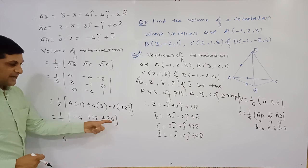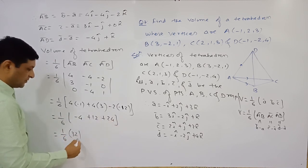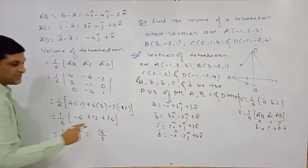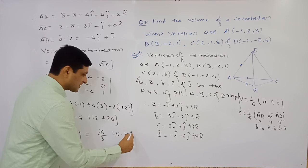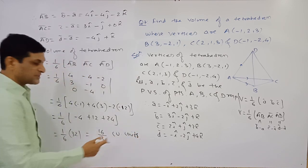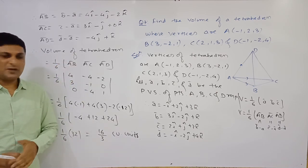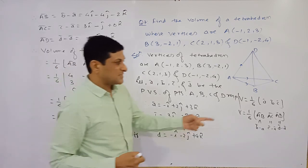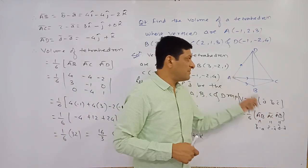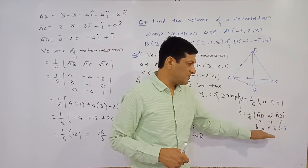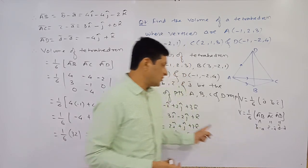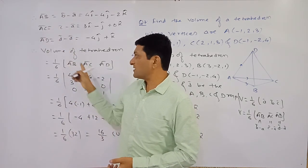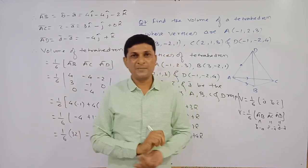So the volume = (1/6) × 32 = 32/6 = 16/3 cubic units. The formula is straightforward: use (1/6) × scalar triple product of the coterminous edges. Find position vectors from coordinates, compute AB̅, AC̅, AD̅, substitute into the determinant formula, and simplify to get the volume.